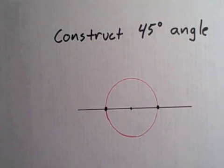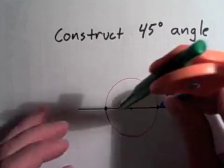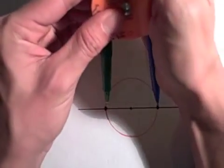Next with the two points of intersection, place your compass point on one, pencil on the other, draw an arc.